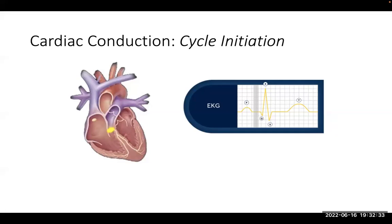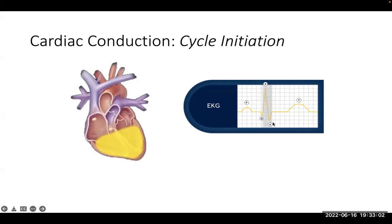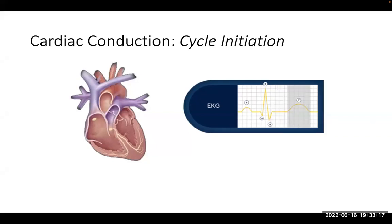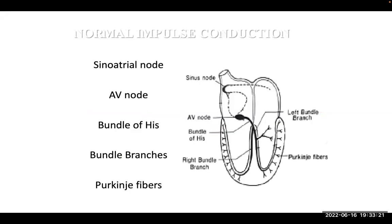After that, electricity is transmitted through the ventricles via the His-Purkinje fiber system, represented by the QRS complex — the QRS represents ventricular depolarization. Then we have the ST segment, which is called a silent area and is a very important component. Finally the T wave represents ventricular repolarization. This is another summary: the impulse goes from the sinoatrial node to the AV node, held there briefly, then to the bundle of His which divides into left and right bundle branches, then to the Purkinje fibers contacting the muscles.